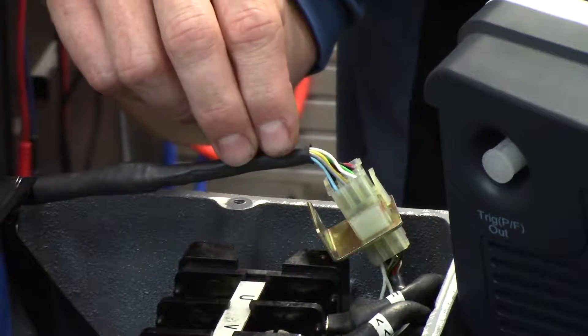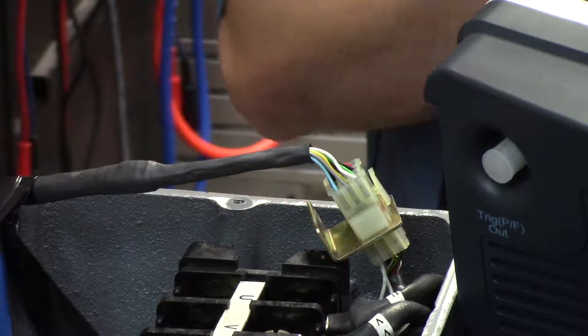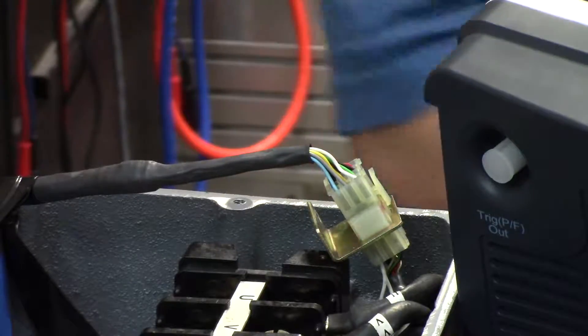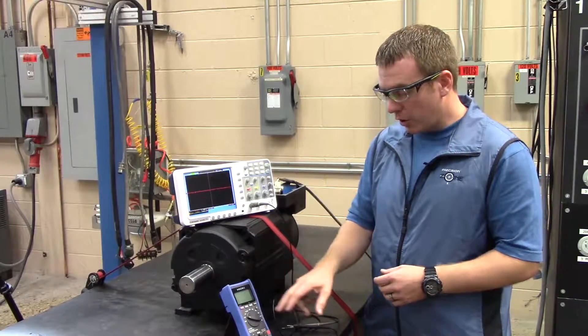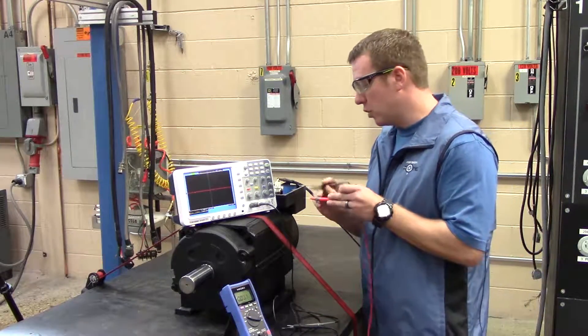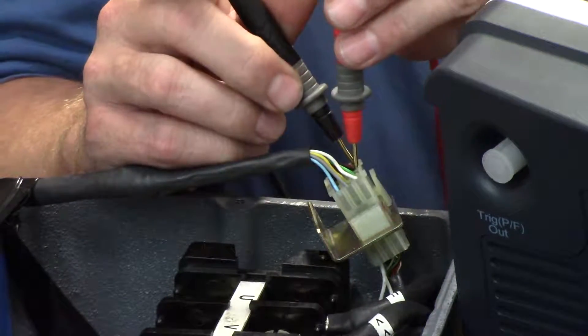Now when you have that all set, you're going to turn on your machine and you can verify that you have power to your encoder by taking a digital multimeter, turning it to the DC setting and checking between pin 1 and 2 and we have 5 volts.